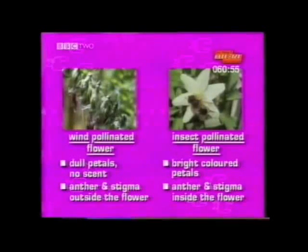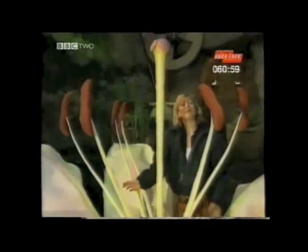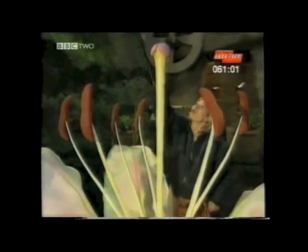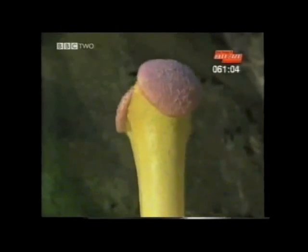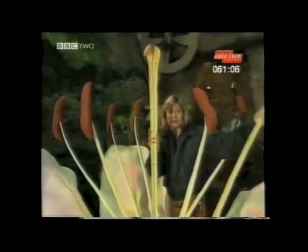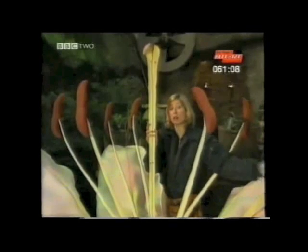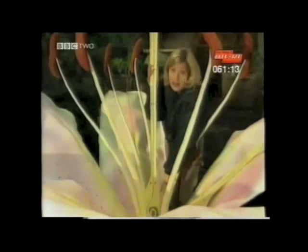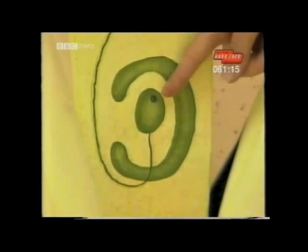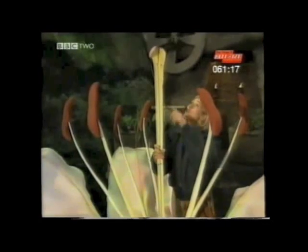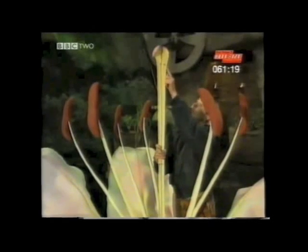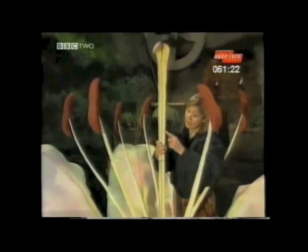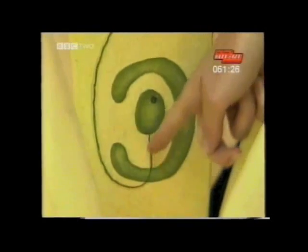So that's pollination. But what happens after that? The flower is pollinated and the pollen lands on the stigma, but it still isn't fertilisation. The nucleus in the pollen still has to reach the nucleus in the egg. The pollen grows a long tube — like a long straw — which funnels the nucleus to the egg.